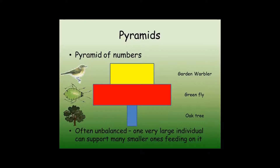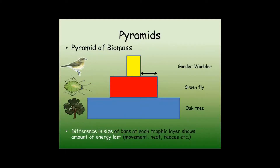For example, a single oak tree supporting many thousands of small greenfly. A pyramid of biomass is a much better way of showing what's happening, as it takes account of the size as well as the number of individuals.